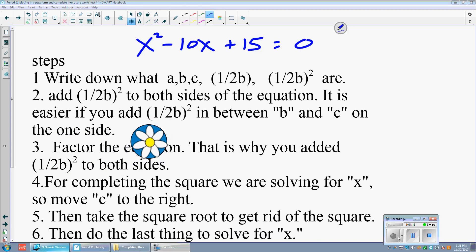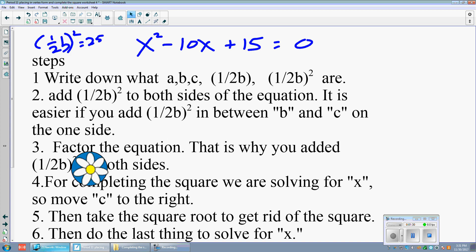What am I talking about? Well, here, I know that half of b squared is 25. So we want to add half of b squared in between b and c. Here's b, there's c, so we have x squared minus 10x plus 25 plus 15 equals 0 plus 25. Remember, what you do to one side of the equal sign, you have to do to the other side of the equal sign.